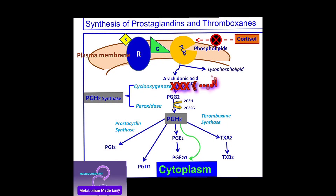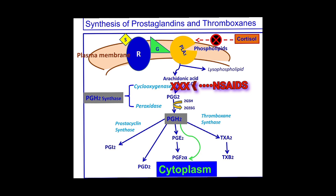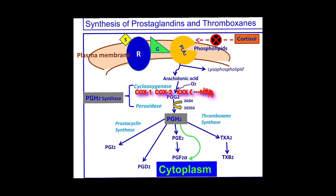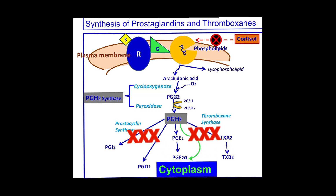Non-steroidal anti-inflammatory drugs, NSAIDs, are potent inhibitors of cyclooxygenases 1 and 2, COX-1 and COX-2. Their effect ultimately is to inhibit the production of prostaglandins and thromboxanes that are associated with inflammation.